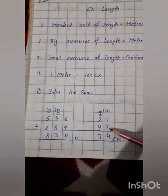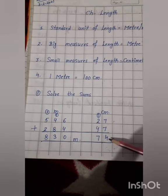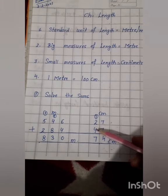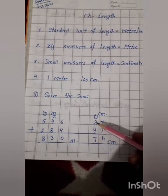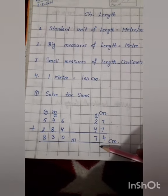See here, 7 added to 7, it's 14. 1 carry and 4 here. 2 added to 4 and added 1. 4 to 6 and 7, we will write 7.